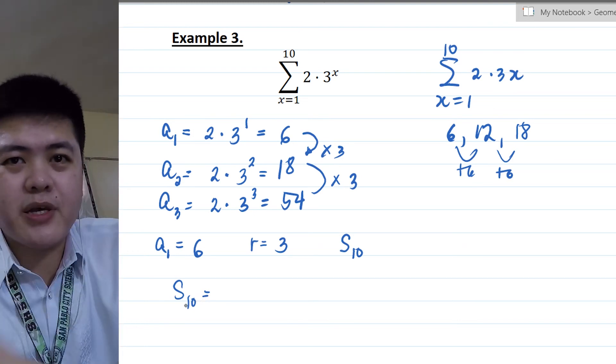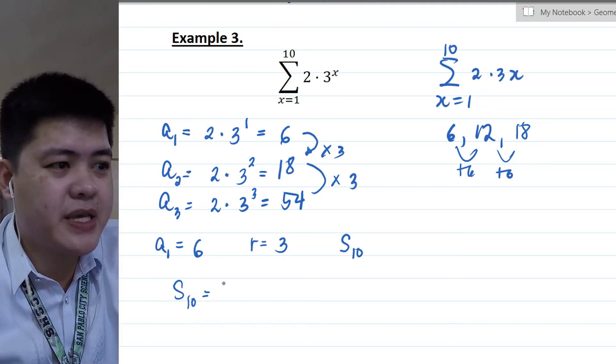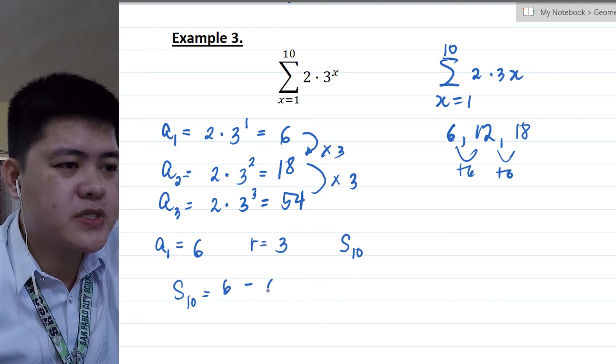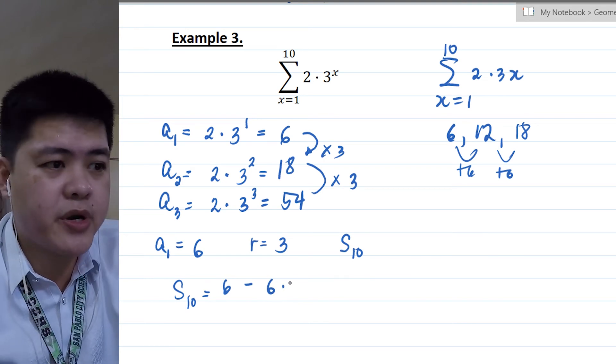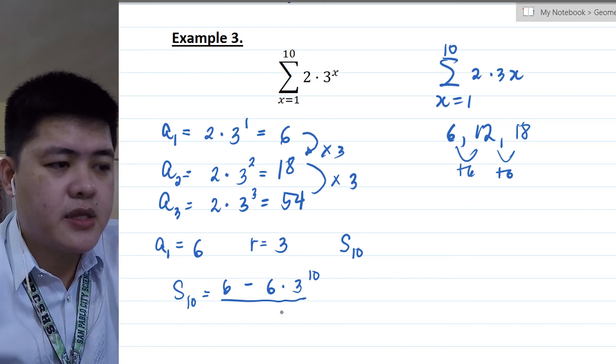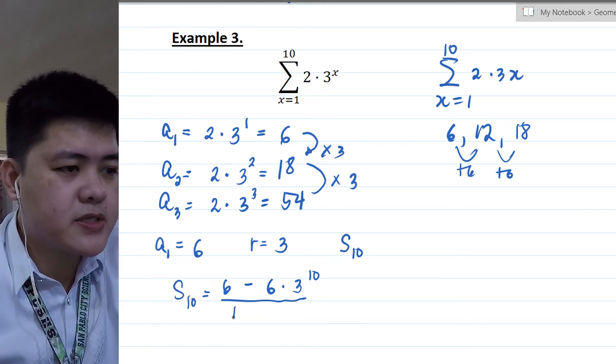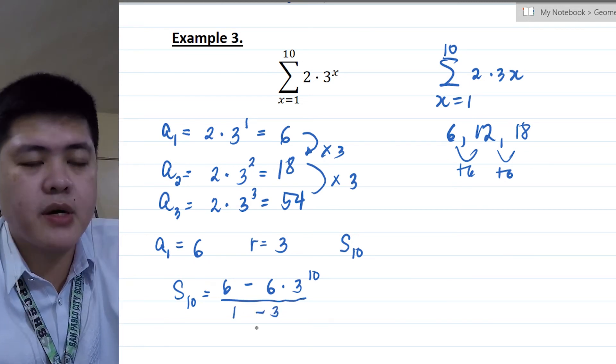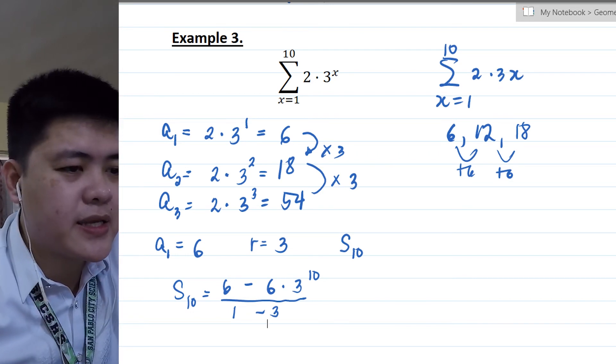So S sub 10, using the formula, the formula is first term A sub 1, which is 6, minus 6 times your common ratio which is 3, raised to 10, divided by 1 minus 3. So again, let's get our calculator.